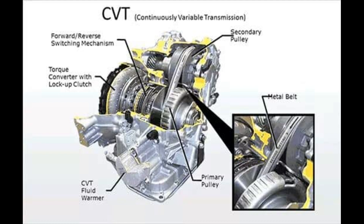At high speed or high gear, while accelerating, the vehicle requires high speed. For that, the driven pulley or secondary pulley diameter becomes smaller as the movable sheave moves away from the static sheave. Due to the same movement of sheaves at the same time, the primary or driving pulley becomes bigger in diameter, which creates a gear ratio between them. One revolution at the driving pulley is equal to four revolutions at the driven pulley.